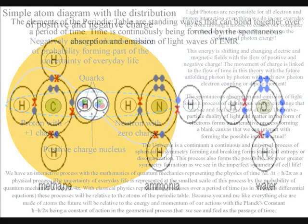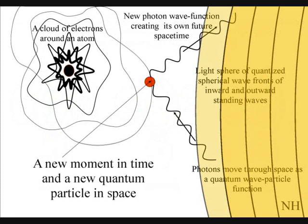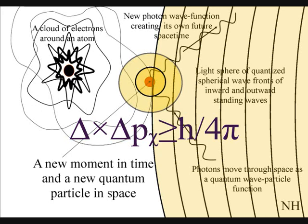In this theory, the atoms are standing waves in time, with the future unfolding photon by photon, with each new photon-electron coupling or dipole moment.